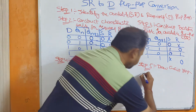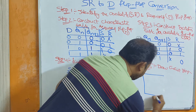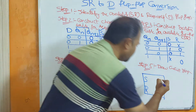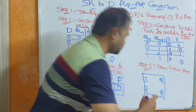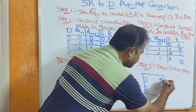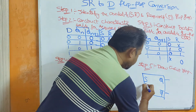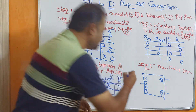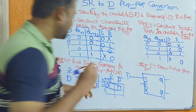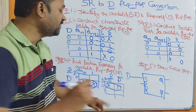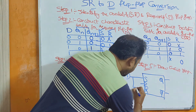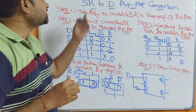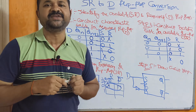Now draw the circuit diagram. The SR flip-flop accepts S and R as inputs along with a clock, and outputs Q and Q-bar. The clock pulse is connected. S receives its input from D directly, and R receives its input from D-bar, which is the complement of D. In this way we can convert an SR flip-flop to a D flip-flop.